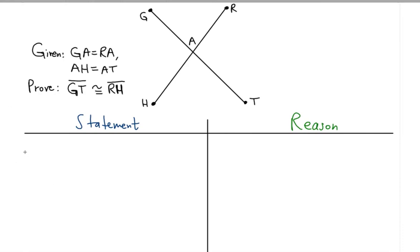In this example, we're trying to prove the statement GT is congruent to RH, so this line segment being congruent to this line segment, based on the given information that GA is equal to RA and AH is equal to AT. It looks like we need to write a few lines of proof to get to the desired outcome.